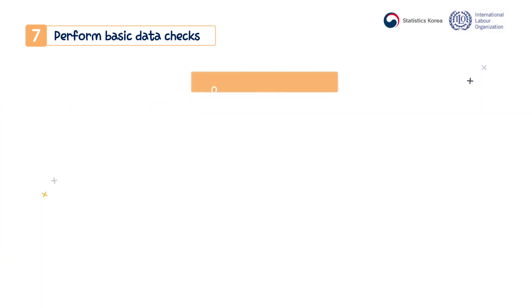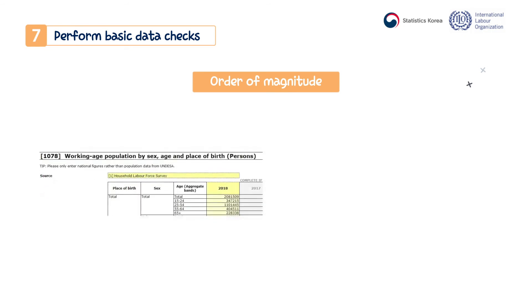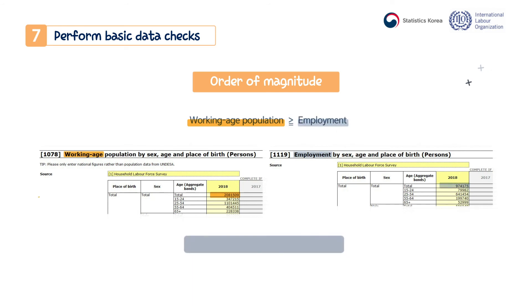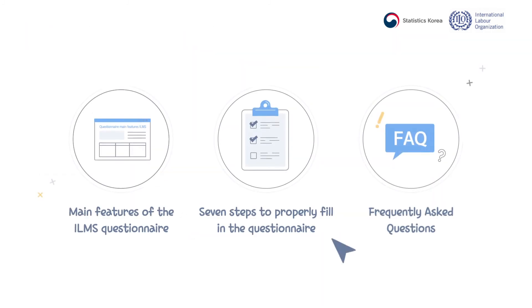Also, please make sure that the order of magnitude of values makes sense. The working age population must be the same or greater than the number of employed population. The total value in any given table must be greater than the value of each category of the table.